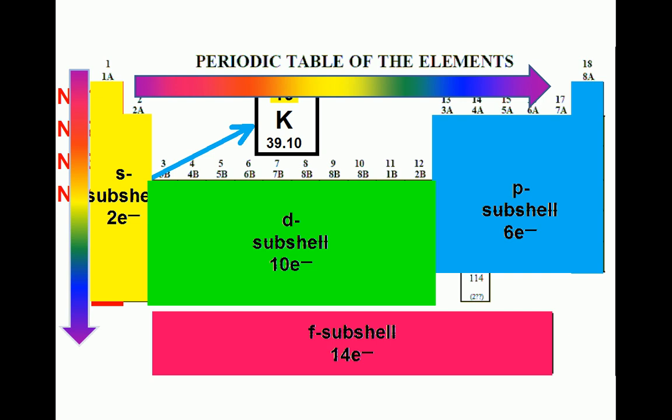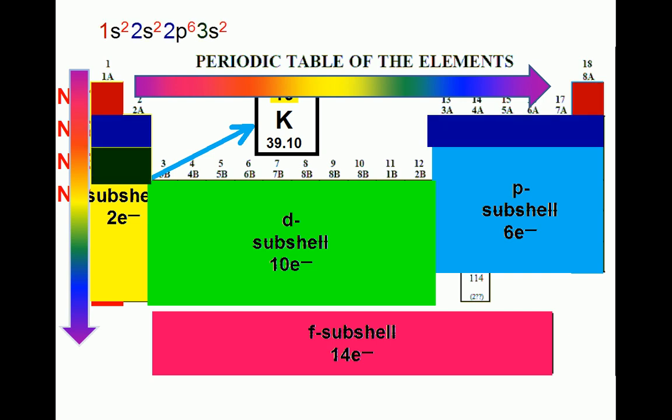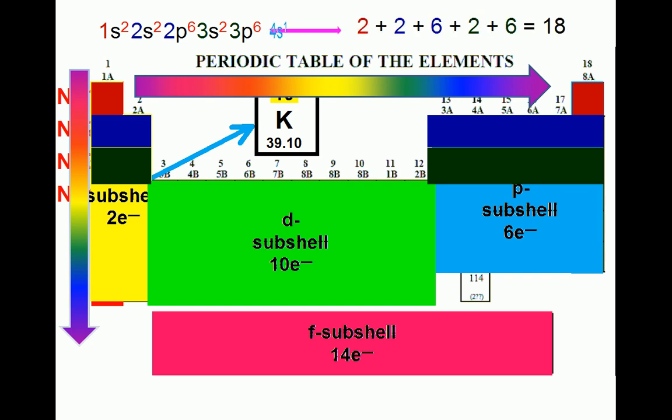Now, let us begin writing the electron configuration of potassium. Potassium is in the fourth row of the periodic table. This means that it possesses all of the electrons of the first three energy levels for a total of 18 electrons.